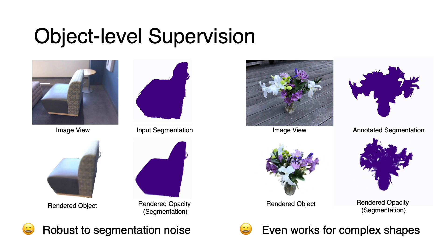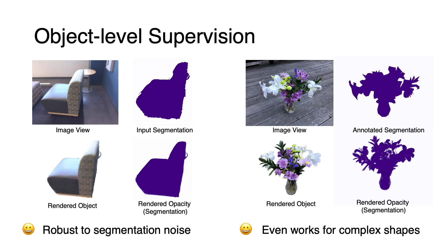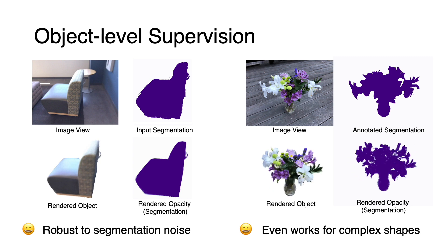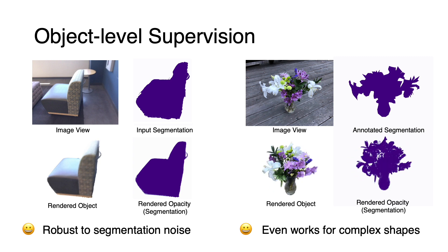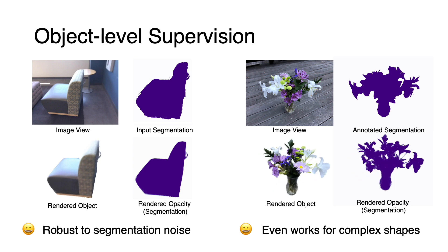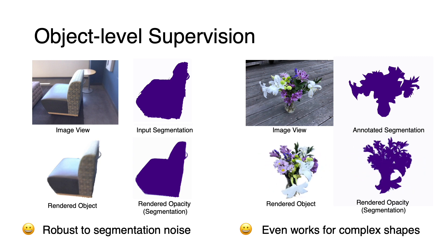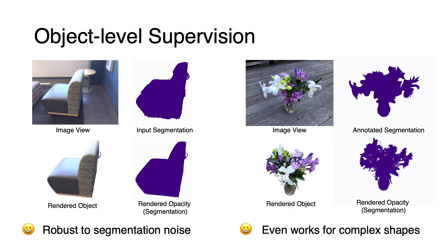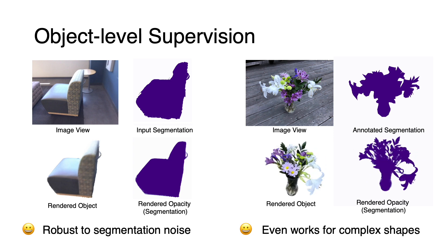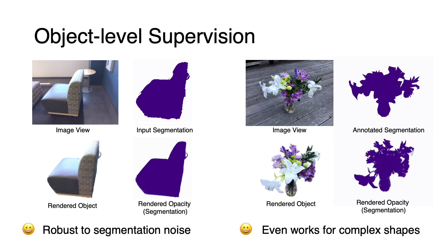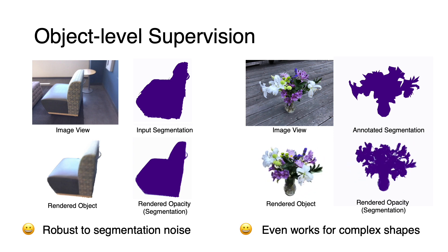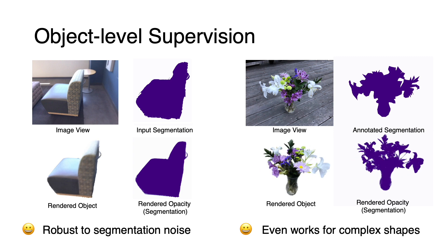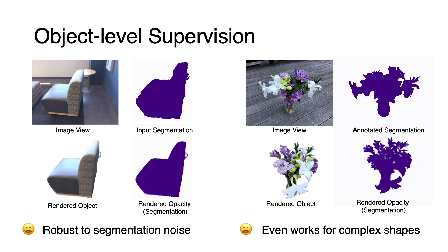We find that our object-level supervision is fairly robust to segmentation noise. In the left example, the input segmentation is rough with jittery edges, yet our scene branch can produce a smooth and accurate segmentation by rendering opacity. In the right example, we train our network to learn a vase deck with manually annotated rough segmentation. As you can see, our method even works for complex shapes.